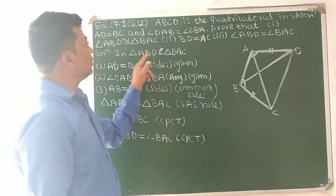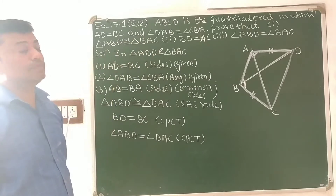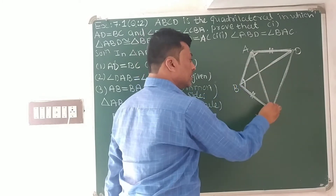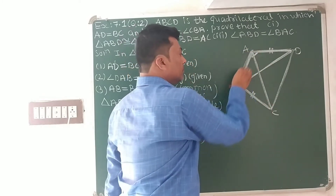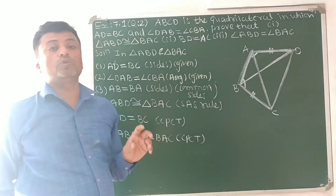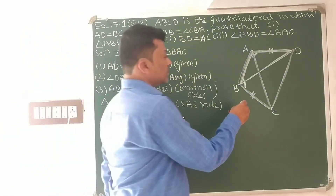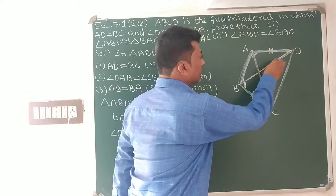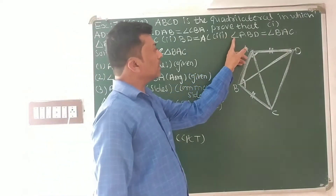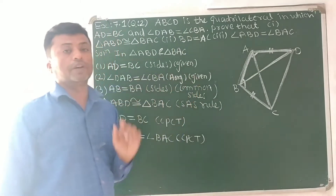What we have to prove: first, triangle ABD congruent to triangle BAC — means this triangle and this triangle are congruent to each other. Next, BD is equal to AC. And also, angle ABD is equal to angle BAC — that we have to prove.